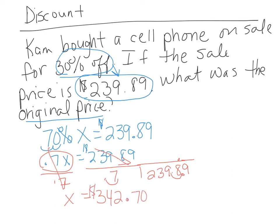So that means the original cost for that cell phone was $342.70. It was on sale for 30% off, so he was able to buy that for $239.89.